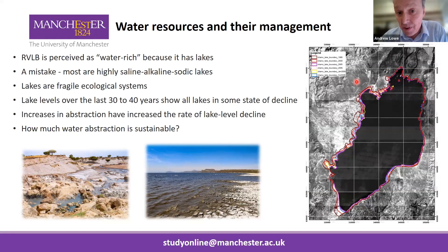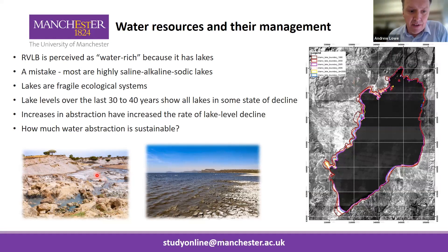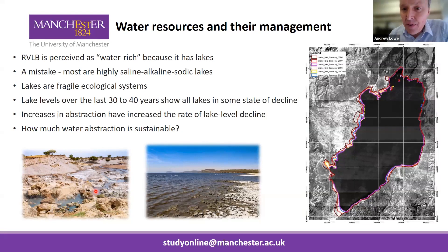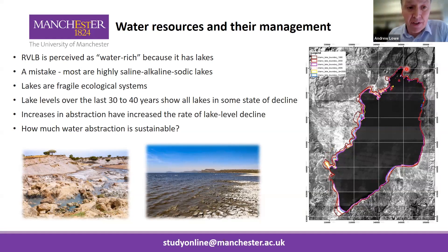We can see in the images Lake Abeata with its salt crusts — very sodic and alkaline — and some hot springs that form around these lakes. In the south of the Rift Valley we have Lake Chamo, which has large Nile crocodiles. You can see through time how the shoreline has changed over the last couple of decades. The Rift Valley has lots of lakes but they're very sodic and alkaline and they're in decline — very fragile ecosystems.